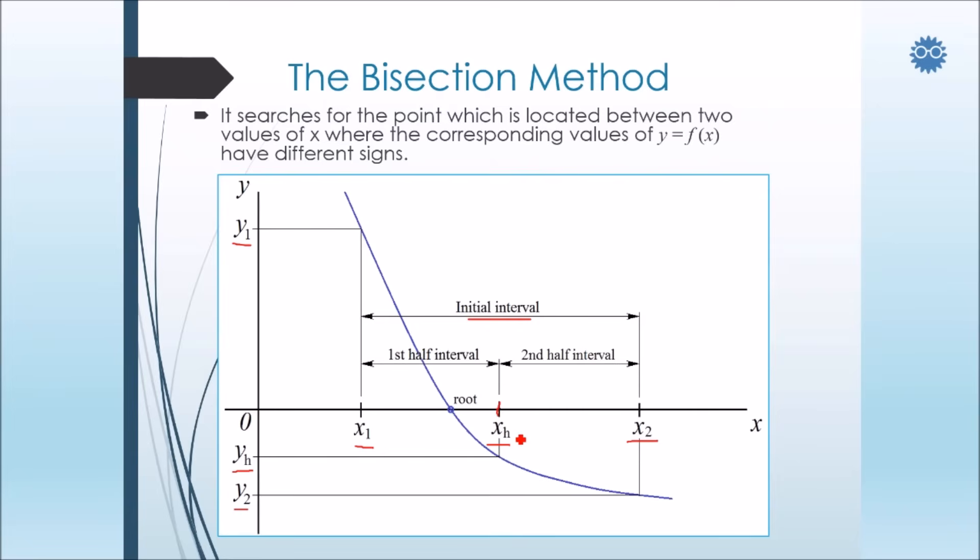So first, before bisectioning, we give the value of xh to x2. That means we create a new interval, x1 and x2, and discard the old value of x2.